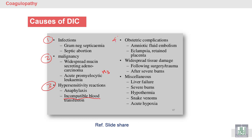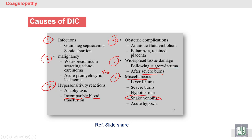Obstetric complications include amniotic fluid embolism, eclampsia, and retained placenta — during pregnancy there are severe conditions that can lead to DIC. Other causes include widespread tissue damage like acute severe pain following major surgery or trauma, liver cell failure, snake venom, and acute hypoxia during operation, surgery, or anesthesia.